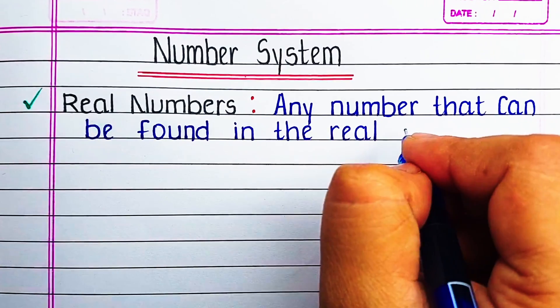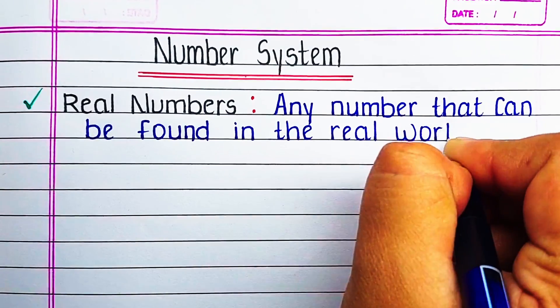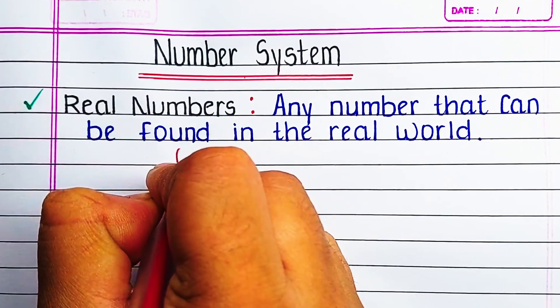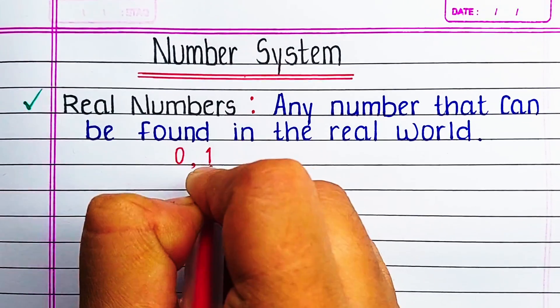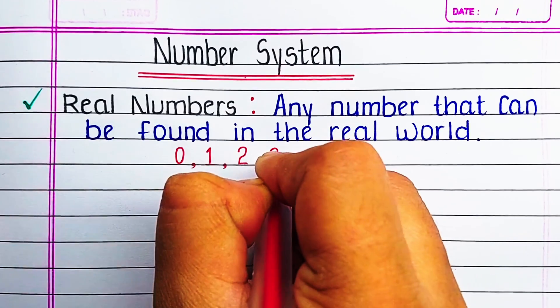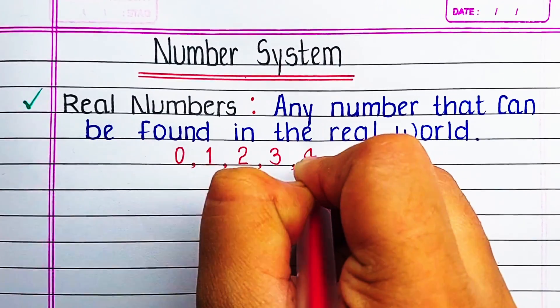The first type of number is real numbers. Any number that can be found in the real world is known as real numbers. For example, 0, 1, 2, 3, 4.